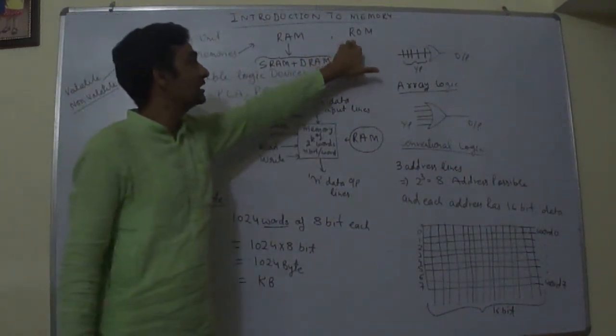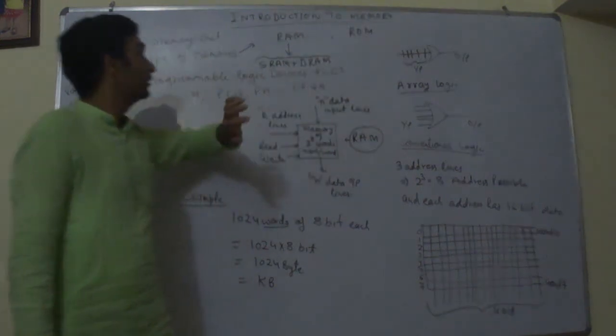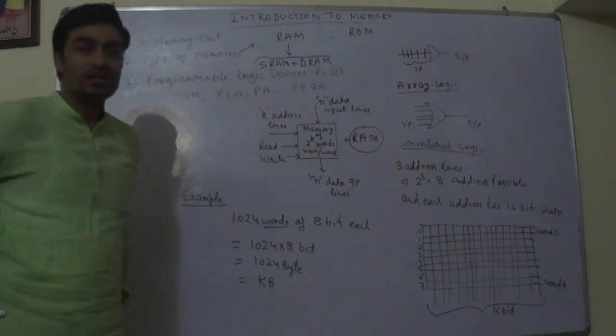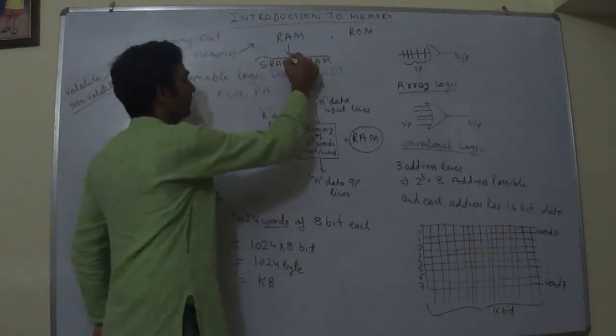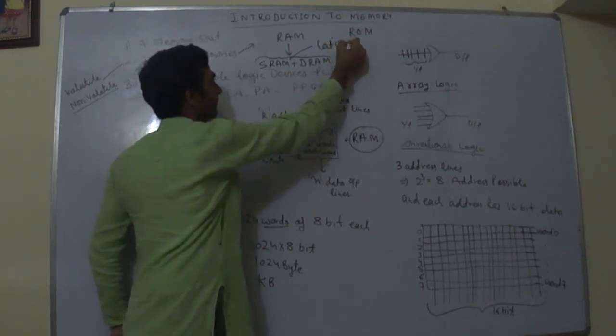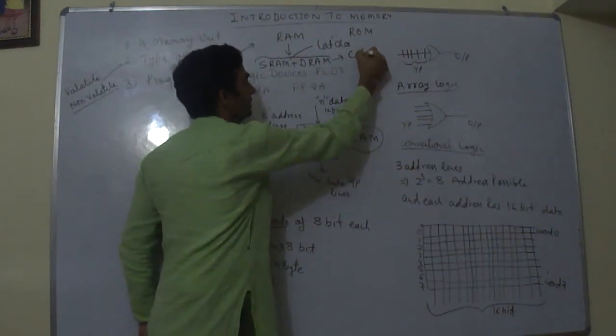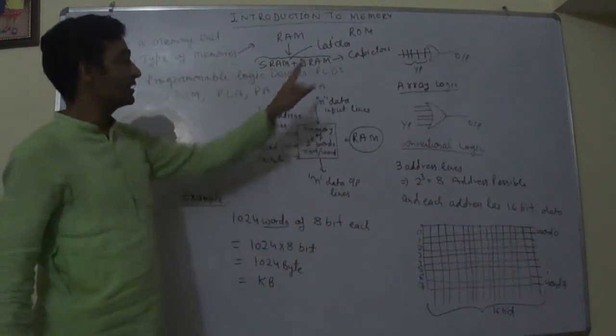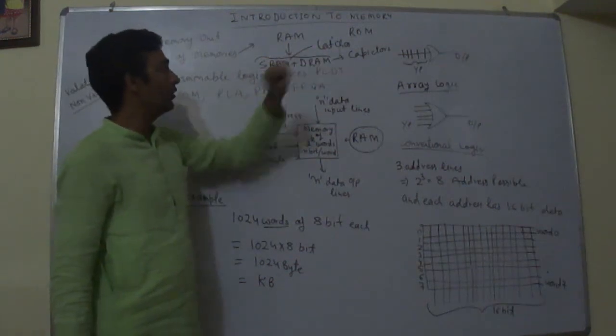RAM, there are two types of RAM: SRAM and DRAM. SRAM is a static RAM, DRAM is a dynamic RAM. SRAM is made up of latches and DRAM is made up of capacitors. This capacitor is made up of metal oxide semiconductor.